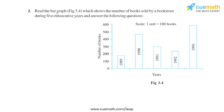Question 2 of this exercise says: read the bar graph which shows the number of books sold by a bookstore during 5 consecutive years and answer the following questions. There are four sub-parts in this question.